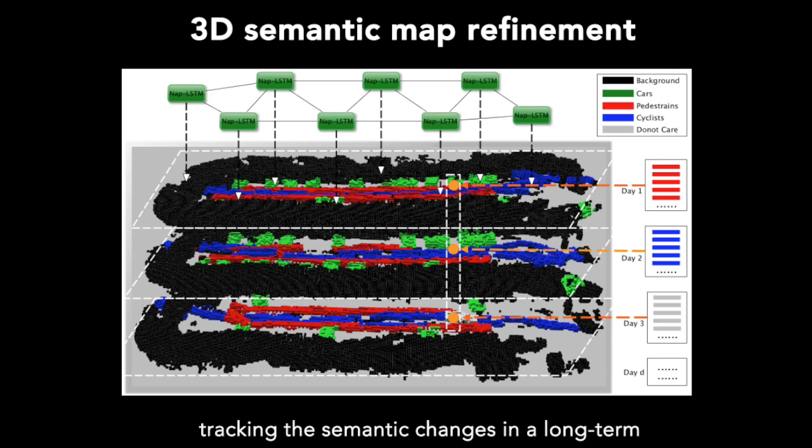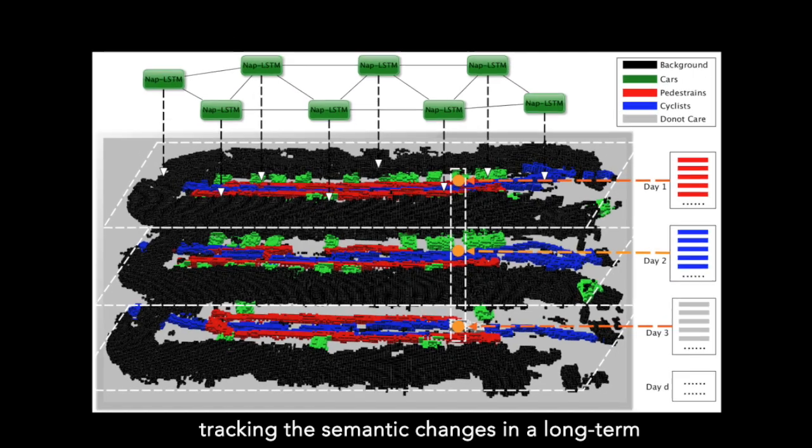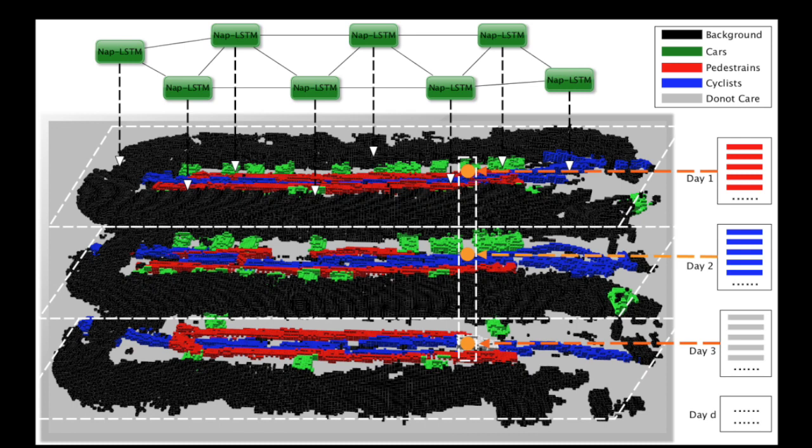For each Octomap cell, we track the transition of semantics in a hidden state space. A recurrent neural network is used to learn the transitions.